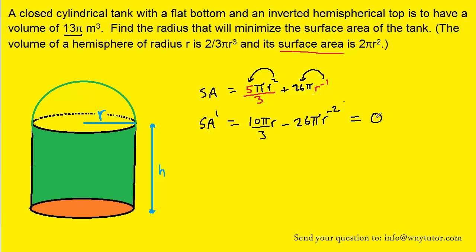We then set the derivative, of course, equal to 0. Why don't we add this 26πr⁻² to both sides of the equation. We can then multiply both sides by r². That's a neat little trick because the r⁻² will cancel with the r². Over here, we'll end up with r³.